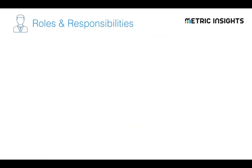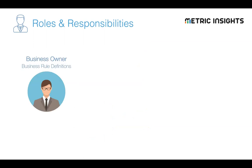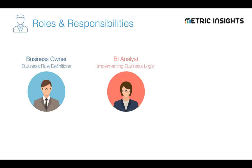Let's talk about roles and responsibilities. There are three primary roles involved. First, the business owner — these are the folks responsible for defining the rules that govern how data should be interpreted: what defines sales, revenue, churn, and all the main things that are going to be measured in a particular report or dashboard. The business has to come up with that consistent definition, and the business owner is responsible for that scope of governance.